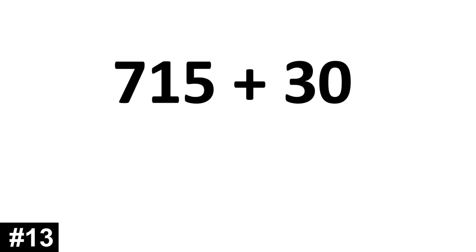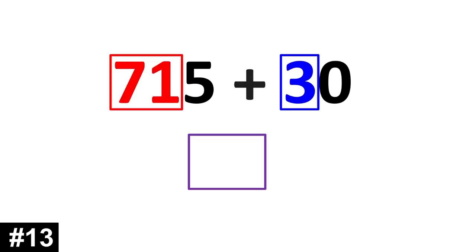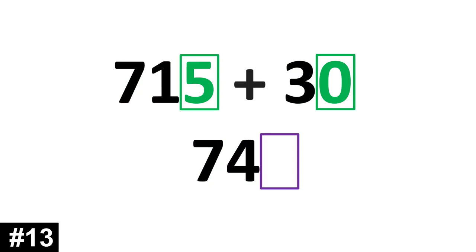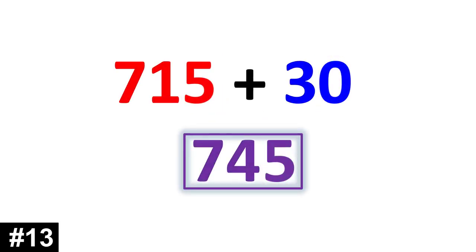715 plus 30. We have 71 tens and 3 tens. 71 plus 3 is 74. We add the ones. 5 and 0 gives us 5. 745.